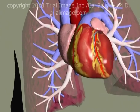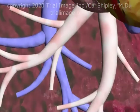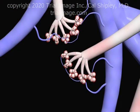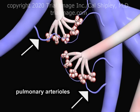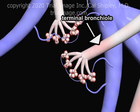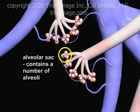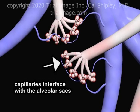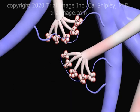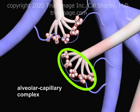Let's zoom in for a closer look to see how the process of oxygen transfer occurs. The pulmonary arterial system and bronchial tree divide down into ever smaller branches. The smallest arterial branch is known as a pulmonary arteriole. Tiny airways known as terminal bronchioles give way to even smaller airways known as respiratory bronchioles. At the end of the respiratory bronchioles are structures known as alveolar sacs. Each alveolar sac consists of a number of individual alveoli. The smallest blood vessels, known as capillaries, originate from the pulmonary arterioles and interface directly with the alveolar sacs. Taken all together, the capillaries and alveolar sacs are termed the alveolar capillary complex.